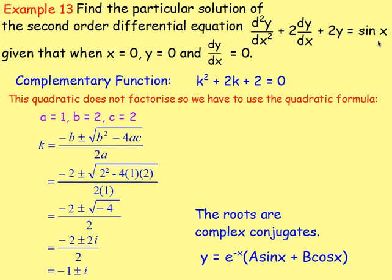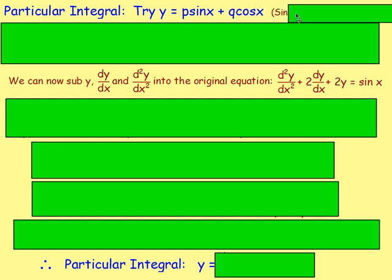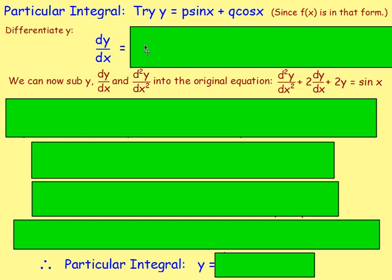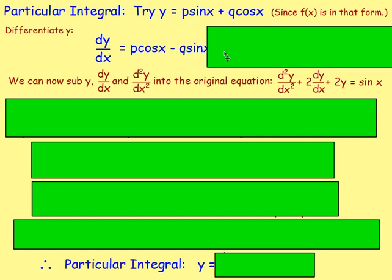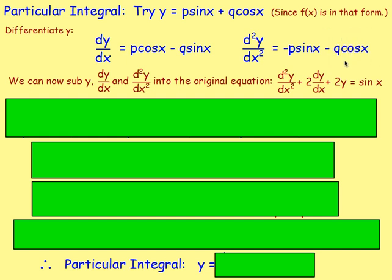For the particular integral, since f(x) = sin x, which is really sin x + 0·cos x, we let y = p sin x + q cos x. Differentiating: dy/dx = p cos x − q sin x. Differentiating again: d²y/dx² = −p sin x − q cos x. We now have y, dy/dx, and d²y/dx² ready to substitute.